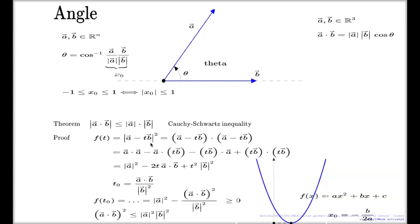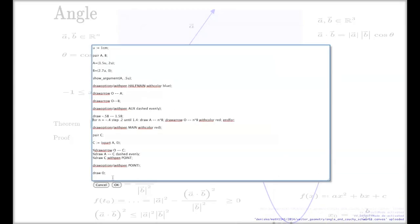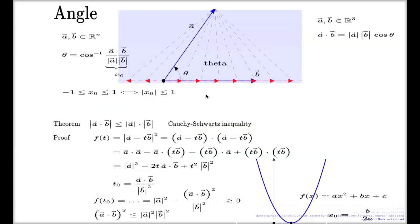If I want to visualize for you the values of this function, I should do something like this. Here. These little different red arrows, they represent different possible scalings of my vector B. And when I take the difference, it will be these dashed lines from the tip of the A to each individual red arrow underneath.